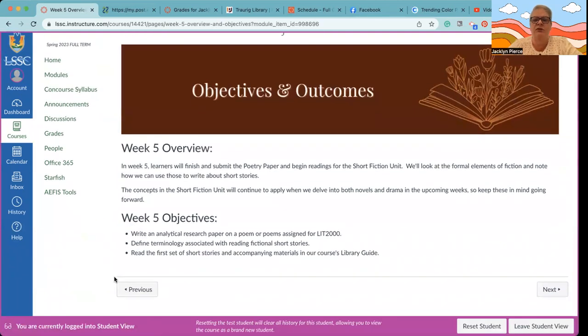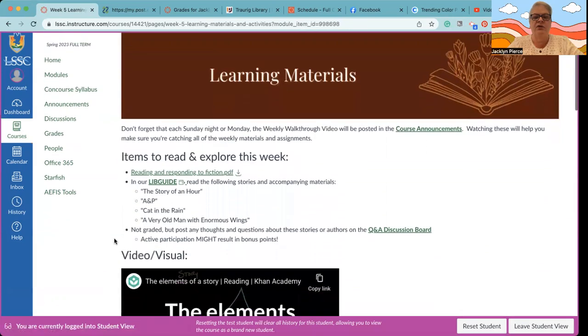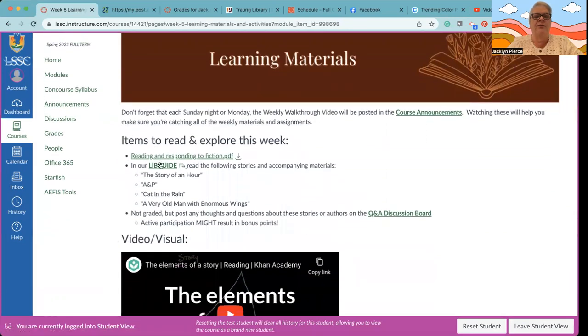We are done with week four. In week five, our overview and objectives—of course we are finishing the poetry paper, beginning the readings for the short fiction unit. So your objectives are a little bit double here. You're going to write the analytical research paper on a poem or poems assigned for the course, and then you're going to get into terminology and stories in terms of how to navigate through short fiction.